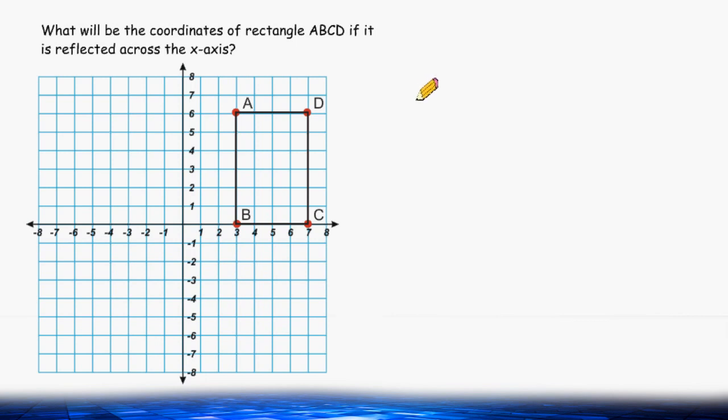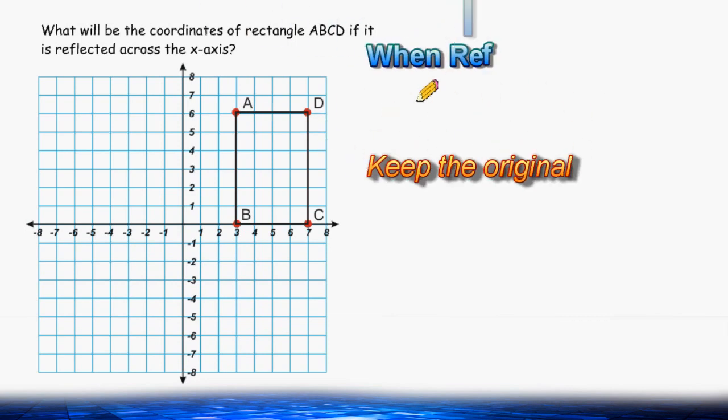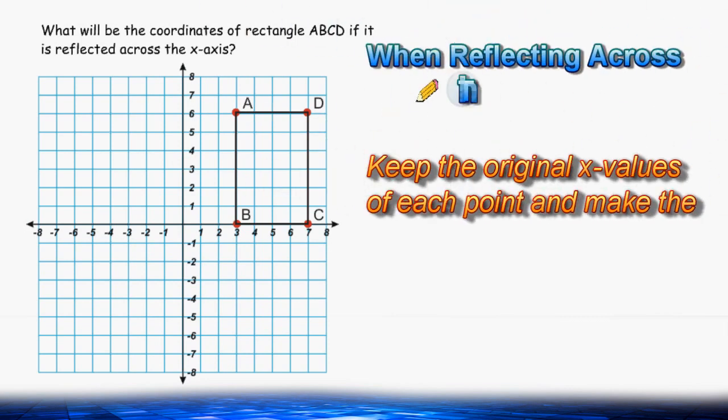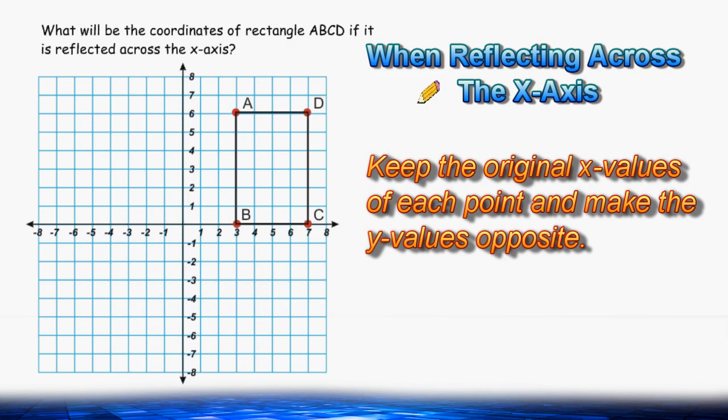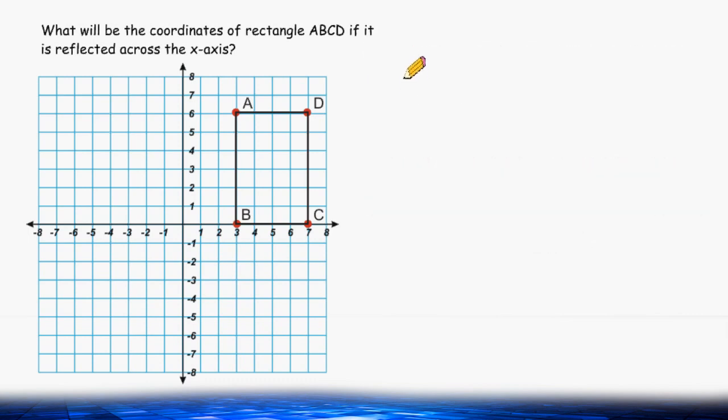When doing a reflection across the x-axis, all of the original points will retain their original x values, and the y values will become opposite. So first, we're going to record the original points.